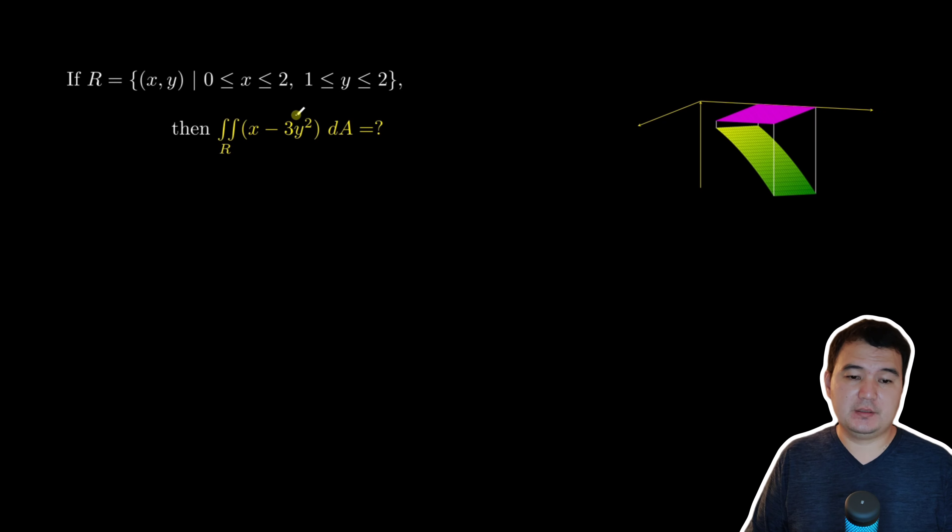Let's take the integral of x minus 3y squared over the following rectangular area. Your x is between 0 and 2, y is between 1 and 2. So that's the rectangular area.